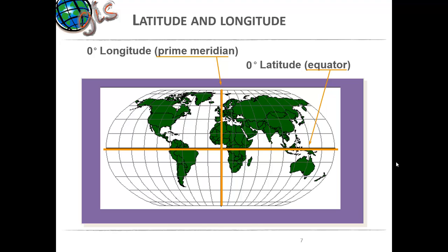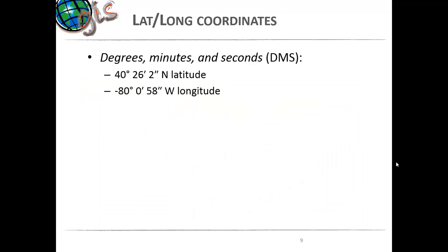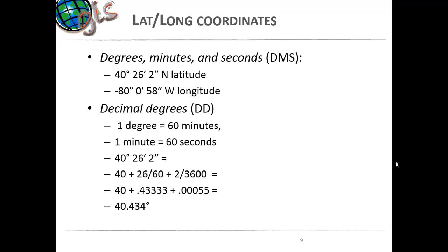Based on these two lines, every place on earth is given a latitude and a longitude. So if you are talking about Pittsburgh, the latitude is 40 degrees, 26 minutes, 2 seconds, and the longitude is minus 80 degrees, 0 minutes, 58 seconds. If you want to convert this into decimal degree units from degrees, minutes, and seconds: one degree is 60 minutes, one minute is 60 seconds.